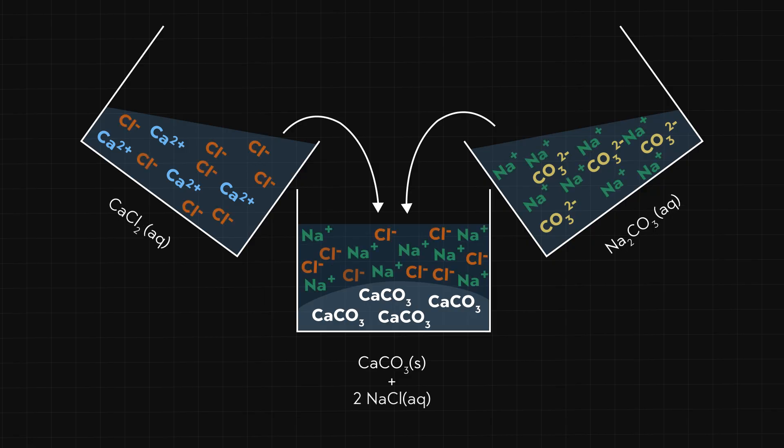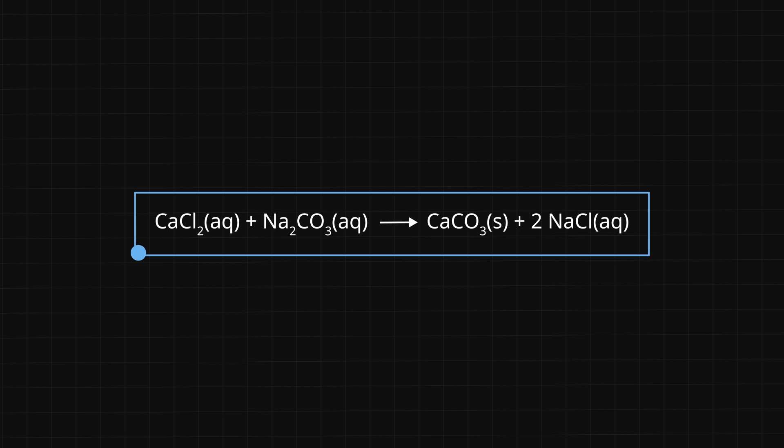The other way includes the spectator ions — ions that are important only because they keep the solution electrically neutral. They are just spectators to the overall chemistry, like a crowd of spectators watching a contest between calcium and carbonate. We drew our starting solutions as if they contained only calcium ions and carbonate ions, but the solutions must be electrically neutral. If we add chlorine atoms to the calcium solution, we can neutralize the charge. Calcium chloride is a soluble salt, so these ions can stay in solution together fine. Similarly, we can add sodium ions to the carbonate ions because sodium carbonate is a soluble salt. After mixing, the sodium chloride remains in solution because sodium chloride is also a soluble salt. This is another way of writing a precipitation reaction — one that includes the spectator ions.